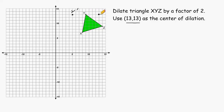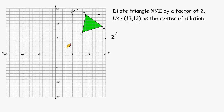Now for point Z, we would have to move 1 to the right in the x direction and down 4 in the y direction. So we repeat that process one more time — over 1 and down 4. This will be the new location of point Z. The distance from the center of dilation to point X is 5 to the left and 6 in the y direction. So we do the same process — move 5 to the left and 6 down from X's original distance. And this will be the new location of point X.